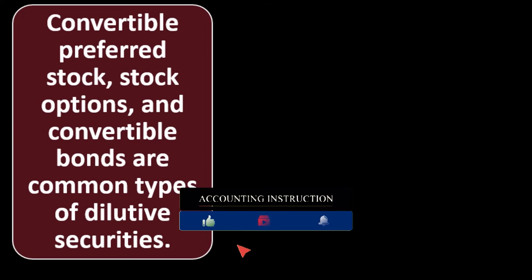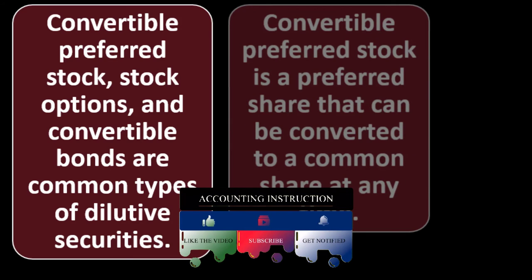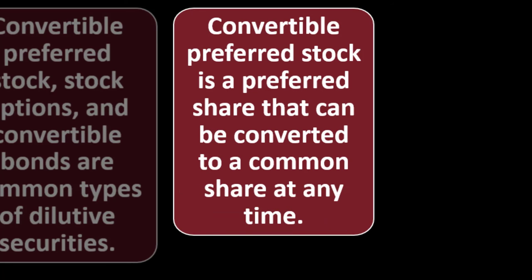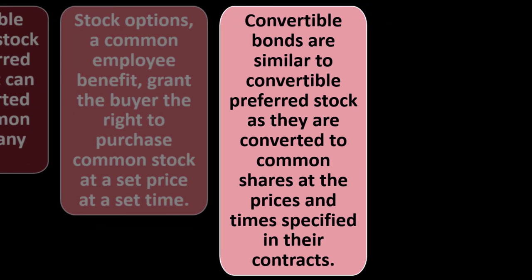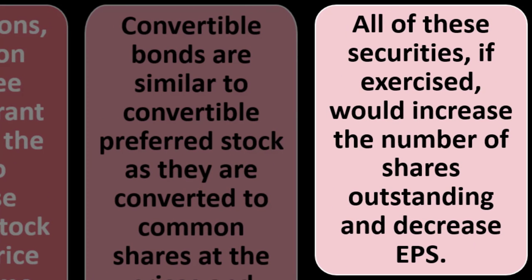Types of dilutive securities: convertible preferred stock, stock options, and convertible bonds are common types. Convertible preferred stock is a preferred share that can be converted to a common share at any time. Stock options — a common employee benefit — grant the buyer the right to purchase common stock at a set price at a set time. Convertible bonds are similar and are converted to common shares at prices and times specified in their contracts. All of these, if exercised, would increase shares outstanding and decrease earnings per share.